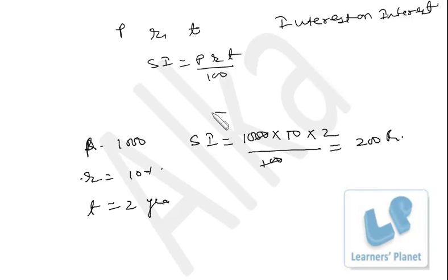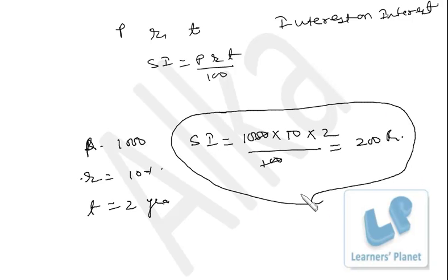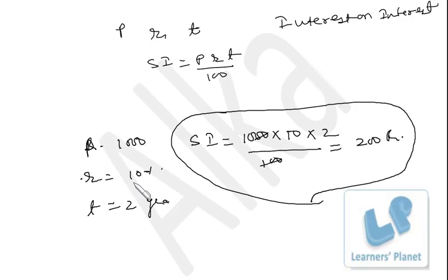After so much practice and attending full sessions on simple and compound interest, you should be able to make this calculation mentally. Principal 1,000 at 10% — simple interest remains the same every year. So for 1 year the interest is Rupees 100, and for 2 years the interest is Rupees 200, because simple interest remains the same every year.